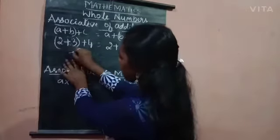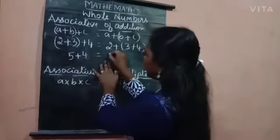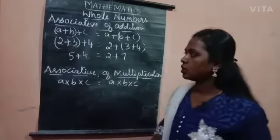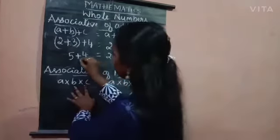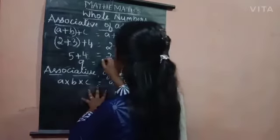2 plus 3 is 5. 5 plus 4 is equal to, write 2 as it is plus 3 plus 4 is 7. So 5 plus 4 is 9 and 2 plus 7 is 9.